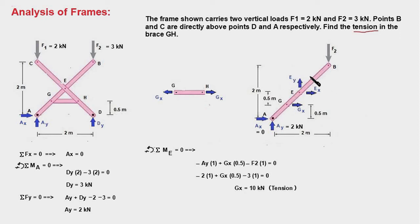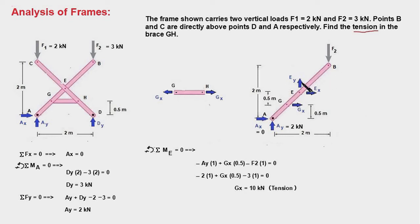You may ask why we haven't drawn the FBD of member CD. The reason is that in this FBD there are only three unknowns: EX, EY, and GX. We have three equations of equilibrium for this member, so we can solve for all three unknowns without needing the FBD of any other member.